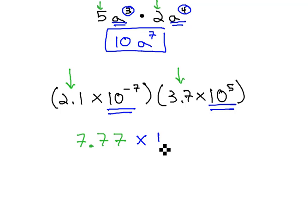Now, for the times 10 part, we will add the exponents. Negative 7 plus 5 is negative 2 to get our final solution.